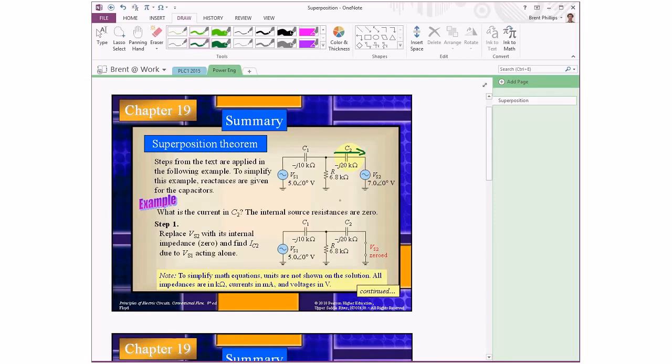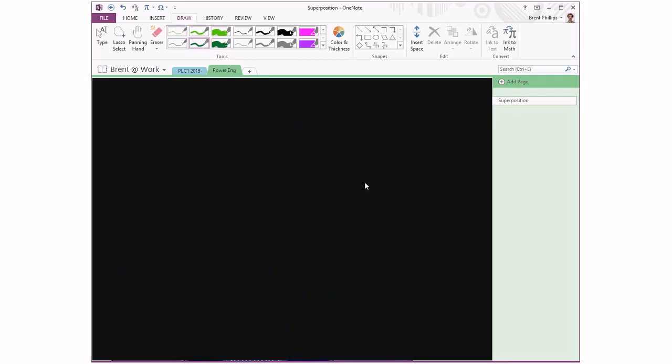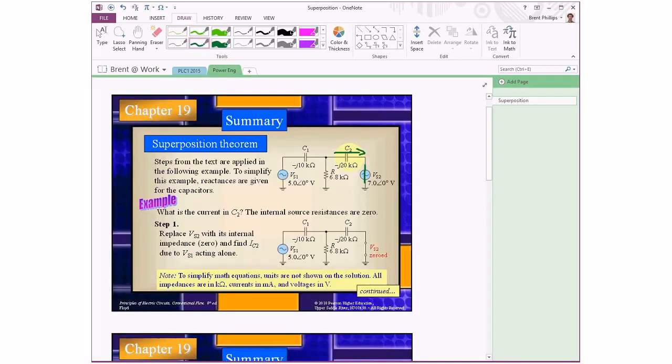To start with, we're going to focus on only one of these voltage sources. We're choosing the left-hand source VS1, and the right-hand source gets replaced with a short circuit. Because the impedance of an ideal voltage source has to be zero ohms, so if we're taking that voltage source out of the circuit, it has to be zero ohms so that any amount of current can flow through there.